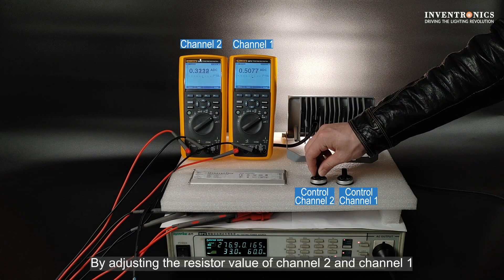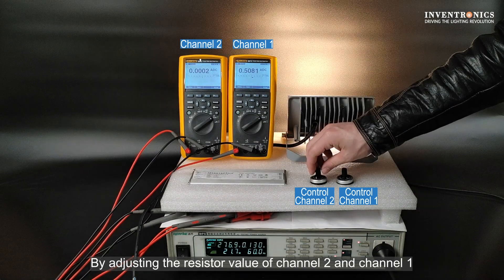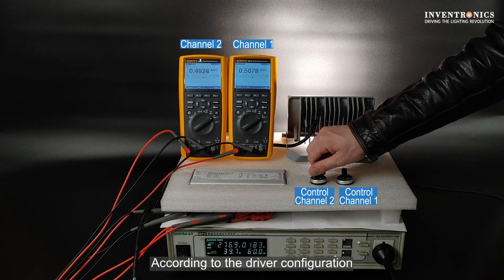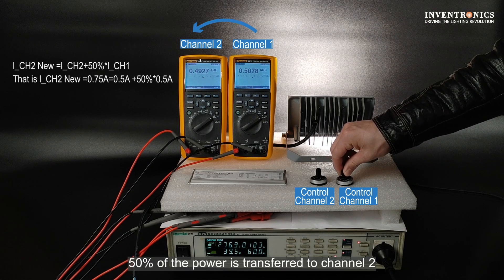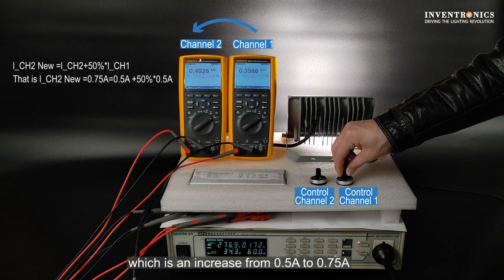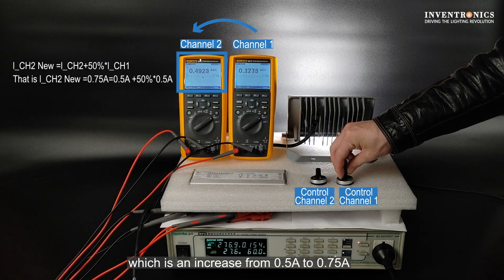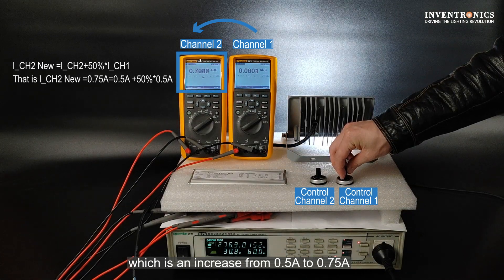By adjusting the resistor value of channel 1 and channel 2, we can set the dim level. According to the driver configuration, when channel 1 is dimmed to off, 50% of the power is transferred to channel 2, which is an increase from 0.5 amps to 0.75 amps.